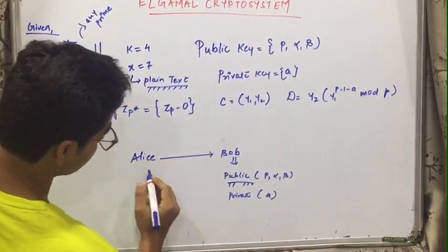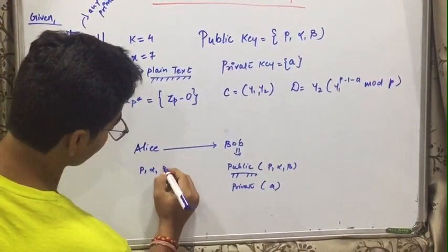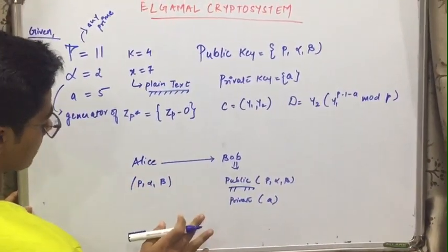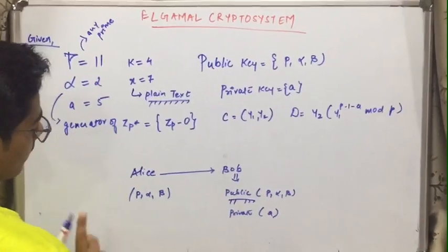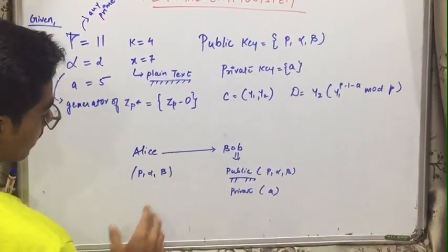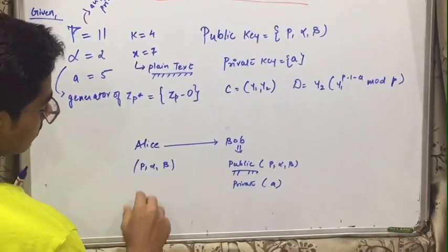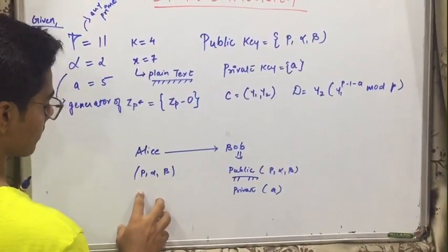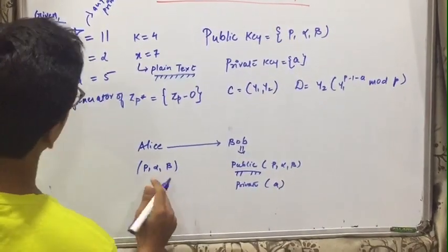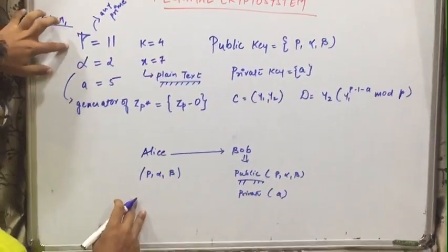So Alice will have this p, alpha and beta. So what is p, what is alpha and what is beta? p will be any large prime or any small prime you can say. As the prime value will be larger, it will be very much difficult for the intruder to keep the message. So if you take p as very large, it will be very difficult for the intruder. So in this example we will be taking p as 11.